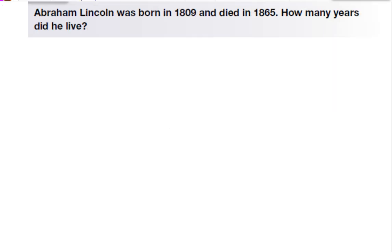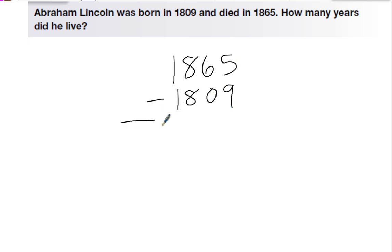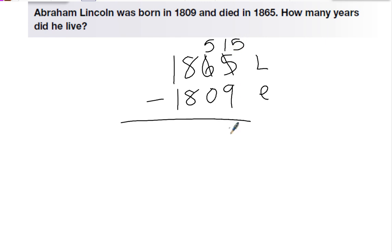Abraham Lincoln was born in 1809 and died in 1865. How many years did he live? Again, this is an elapsed time problem. So I'm going to do 1865 minus 1809 — the later year minus the earlier year. Borrowing: 15 minus 9 is 6, 5 minus 0 is 5, 8 minus 8 is 0, and 1 minus 1 is 0. So he was only 56 years old when he died.